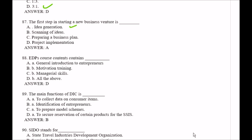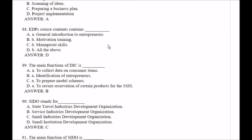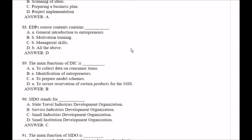Question number 88: EDP's course contains — Option A, a general introduction to entrepreneurs; Option B, motivation training; Option C, managerial skills; Option D, all of the above. The right answer is Option D, all of the above.